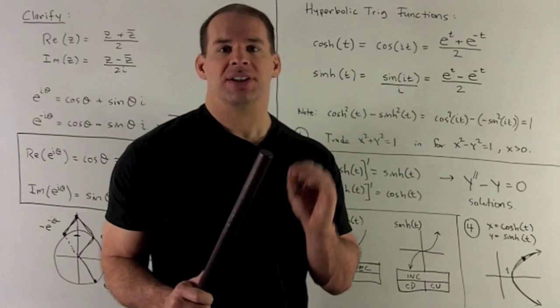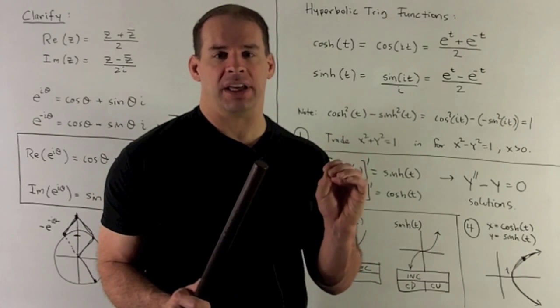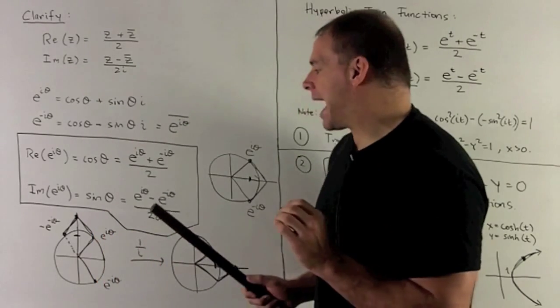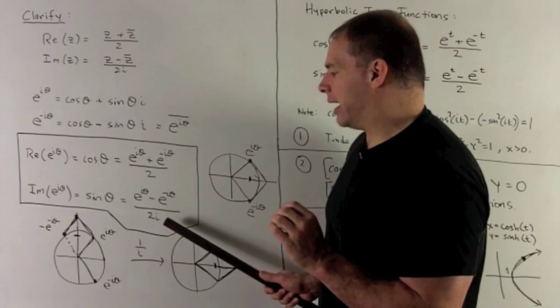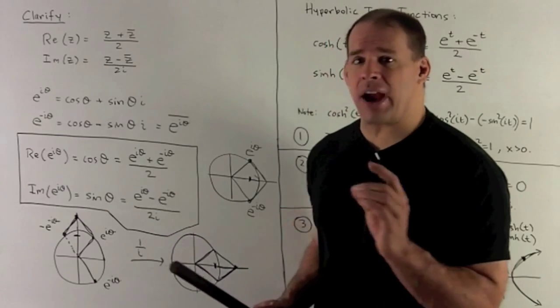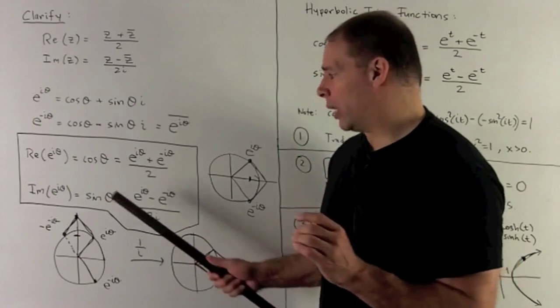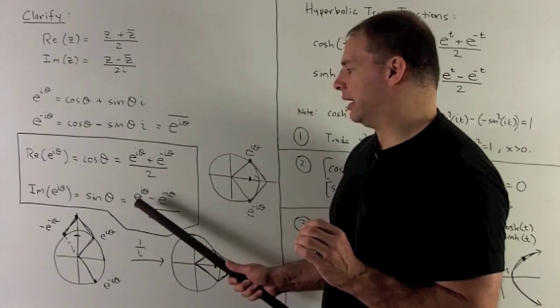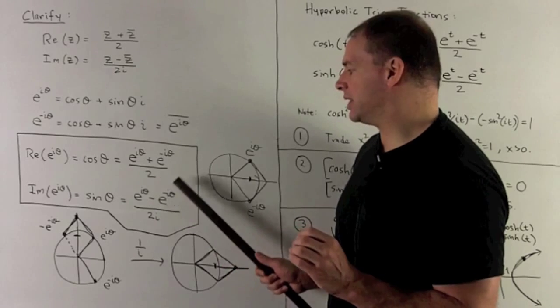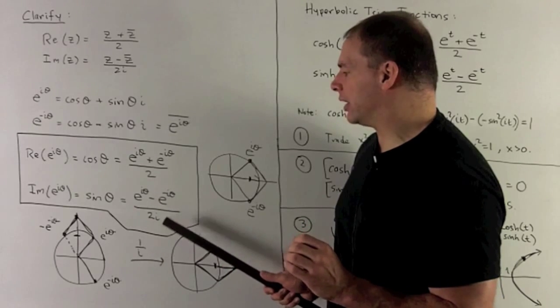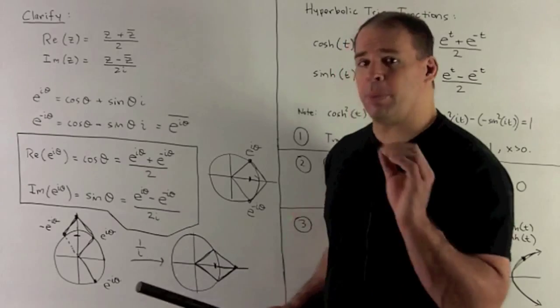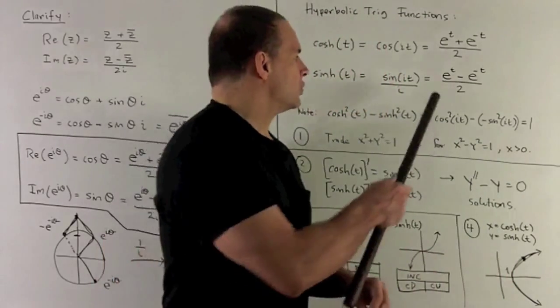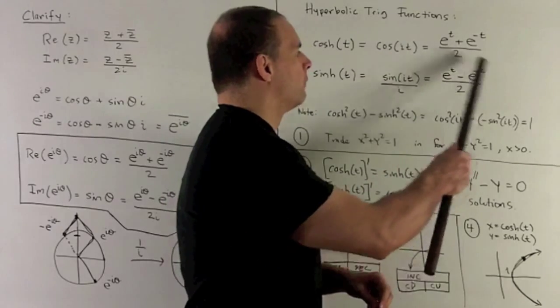For sinh, same idea, we put in iT where we had theta before, but now we divide the whole thing by i. Dividing by i takes out the i in the denominator, which guarantees we'll have a real number when we crunch this down. If I put iT in here, we get e to the minus T minus e to the T, and we have an i down here getting hit with another i, so it multiplies by minus one, which switches the order. So we reproduce the formula for sinh.